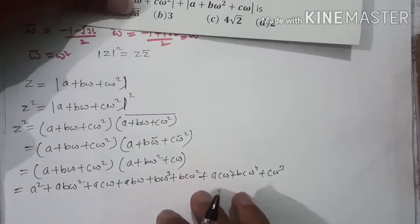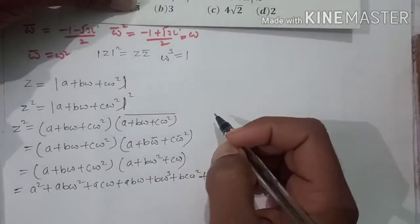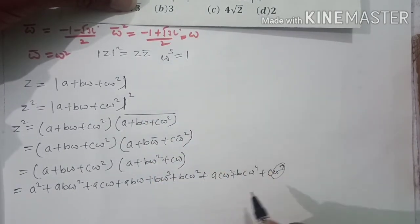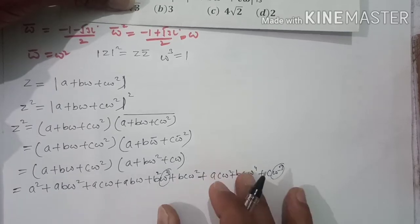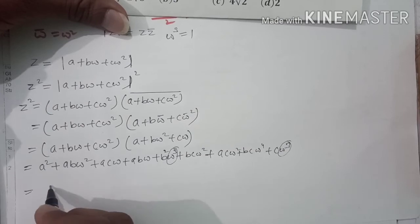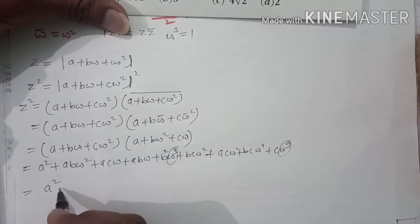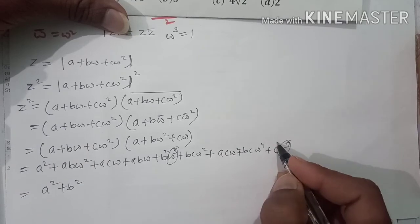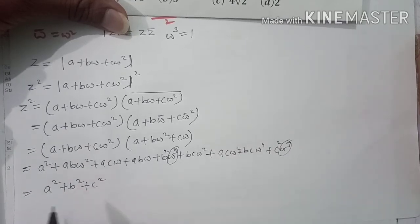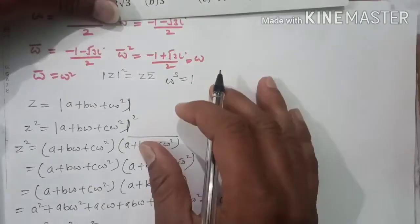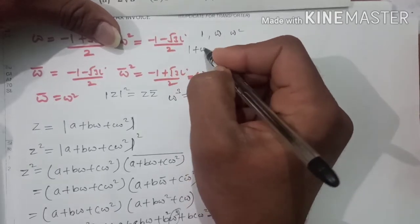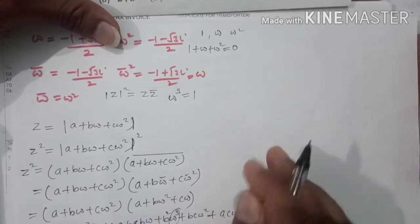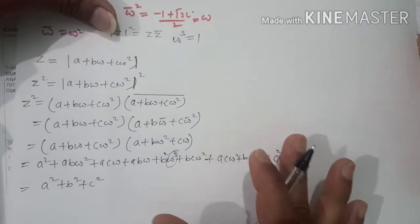آپ کو پتا ہے ω³ = 1، تو جہاں بھی cube آئے وہاں 1 رکھ دیں۔ b²ω³ = b²، c²ω³ = c²۔ اس کے علاوہ 1 + ω + ω² = 0 بھی پتا ہے، یعنی ω + ω² = −1۔ اب باقی terms کو جمع کرتے ہیں: a² + b² + c²۔